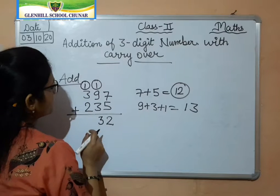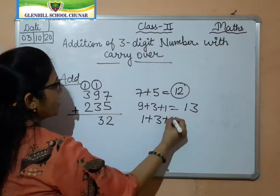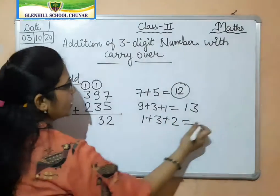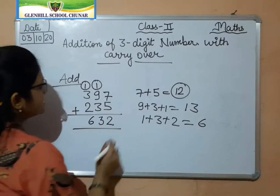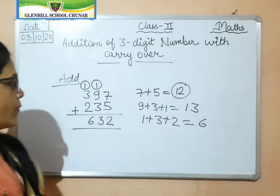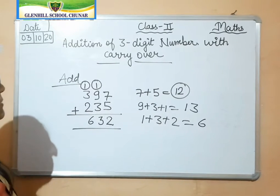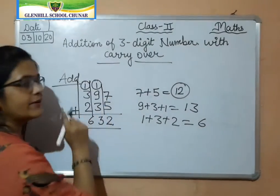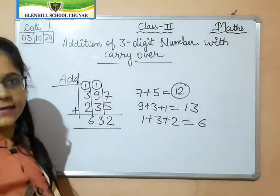Now 1 plus 3 plus 2 is 4 plus 2, which is 6. So the answer becomes 632. This is the right answer. Like this only you have to add — ones with ones, tens with tens, and hundreds with hundreds.